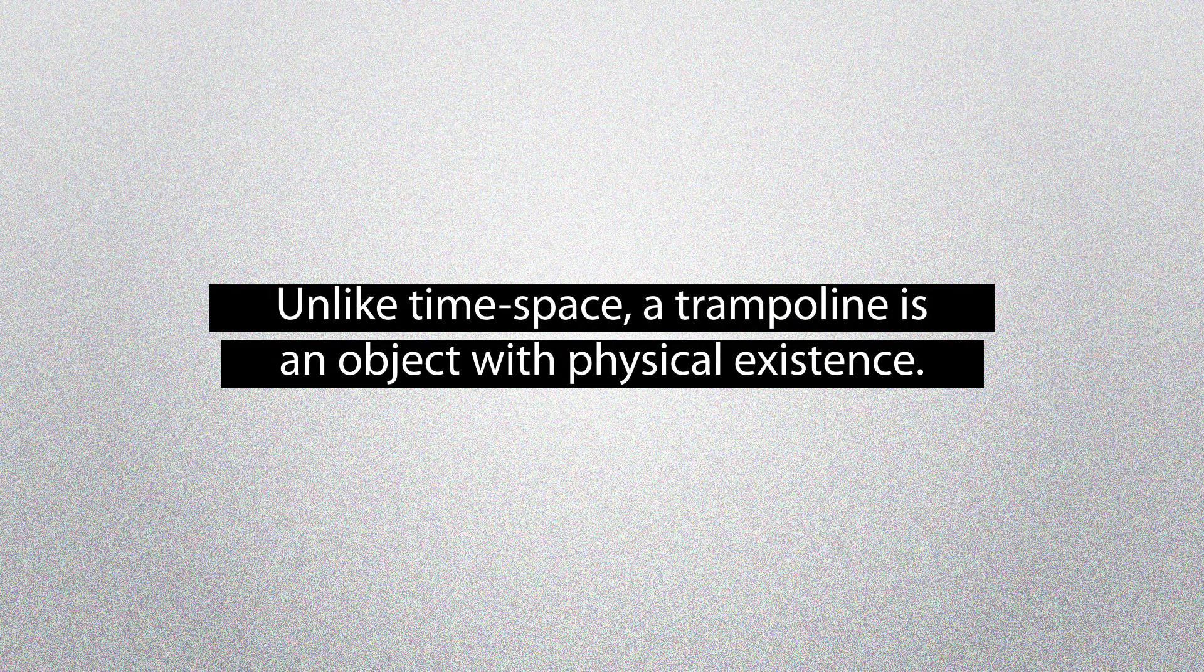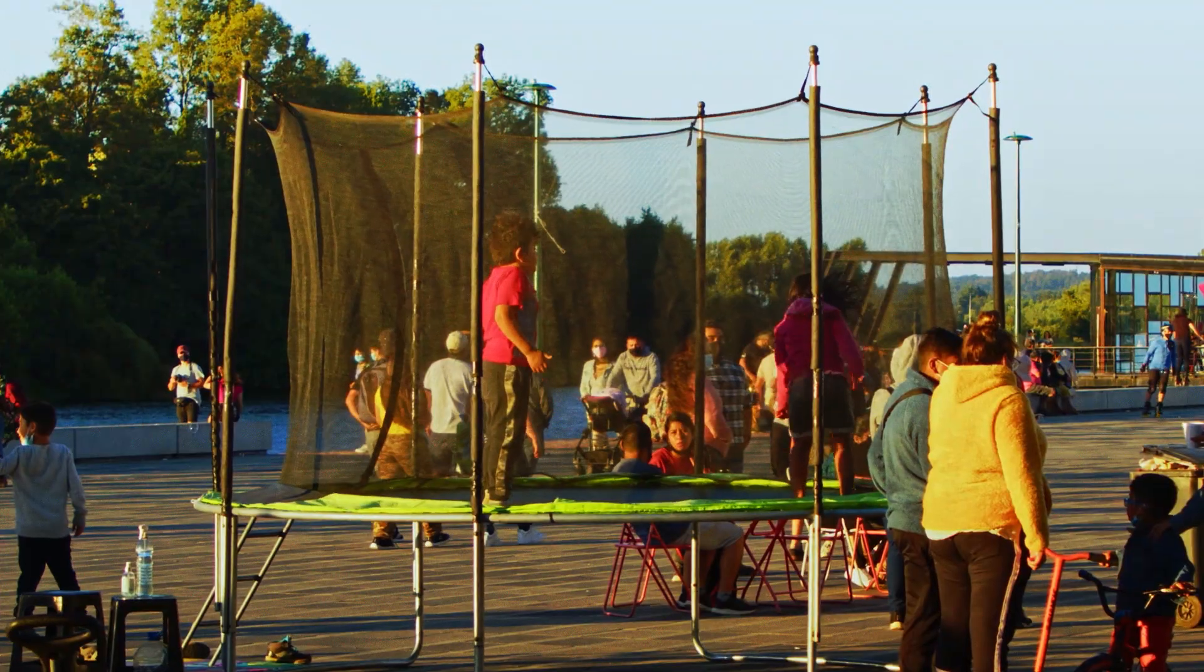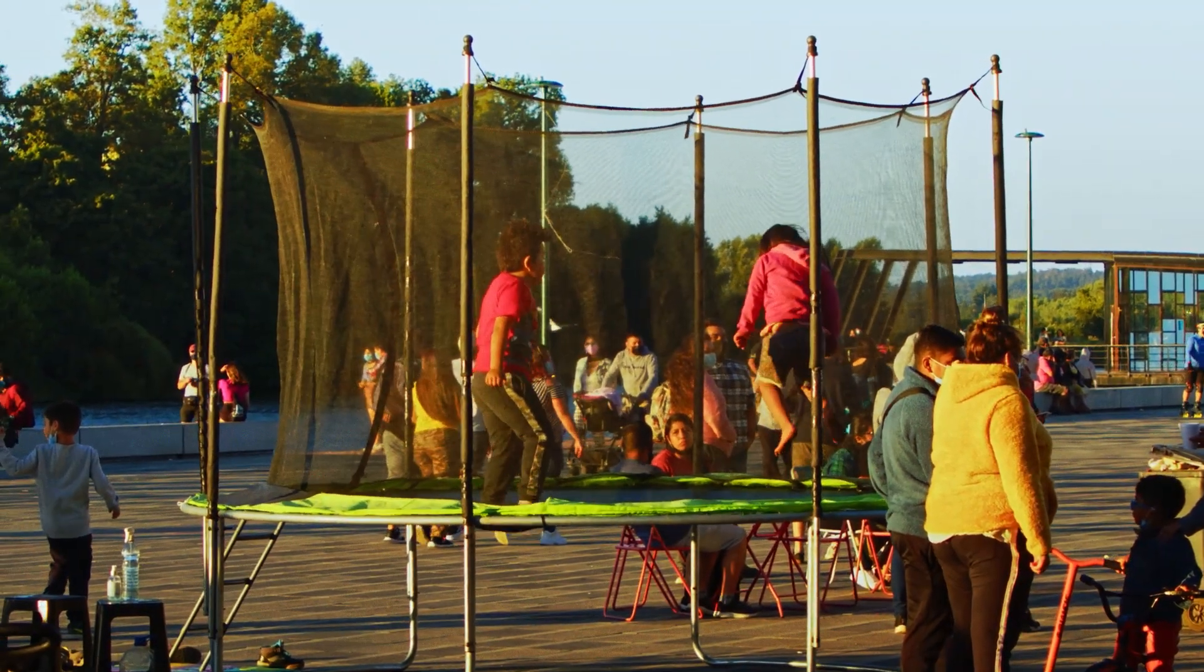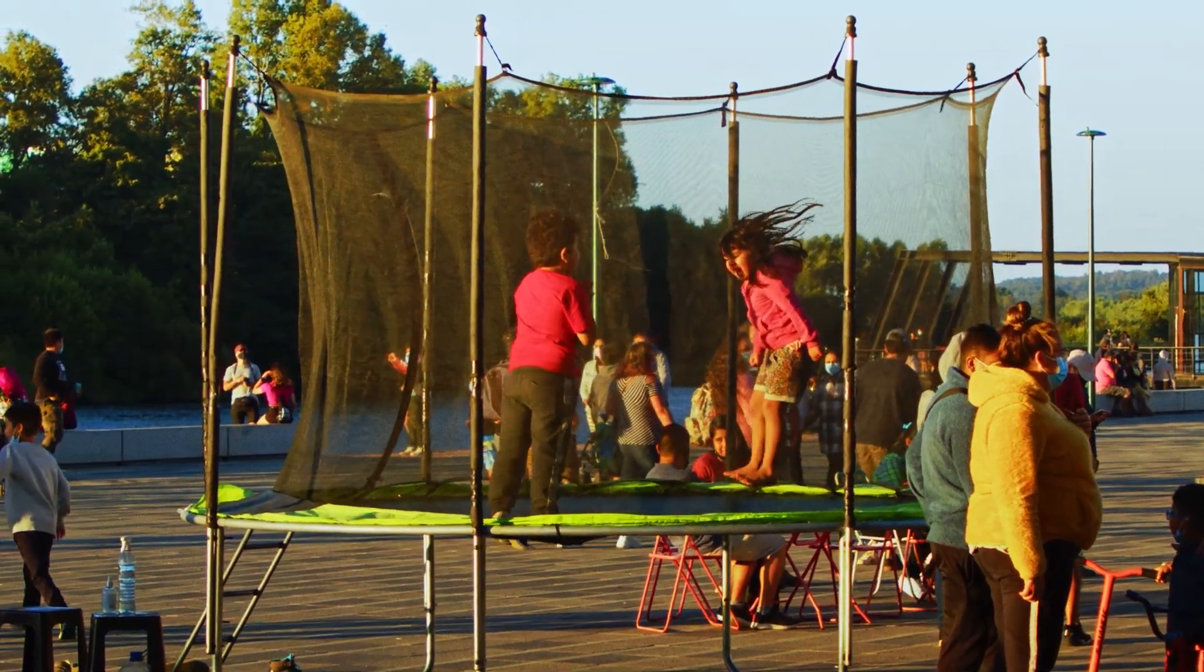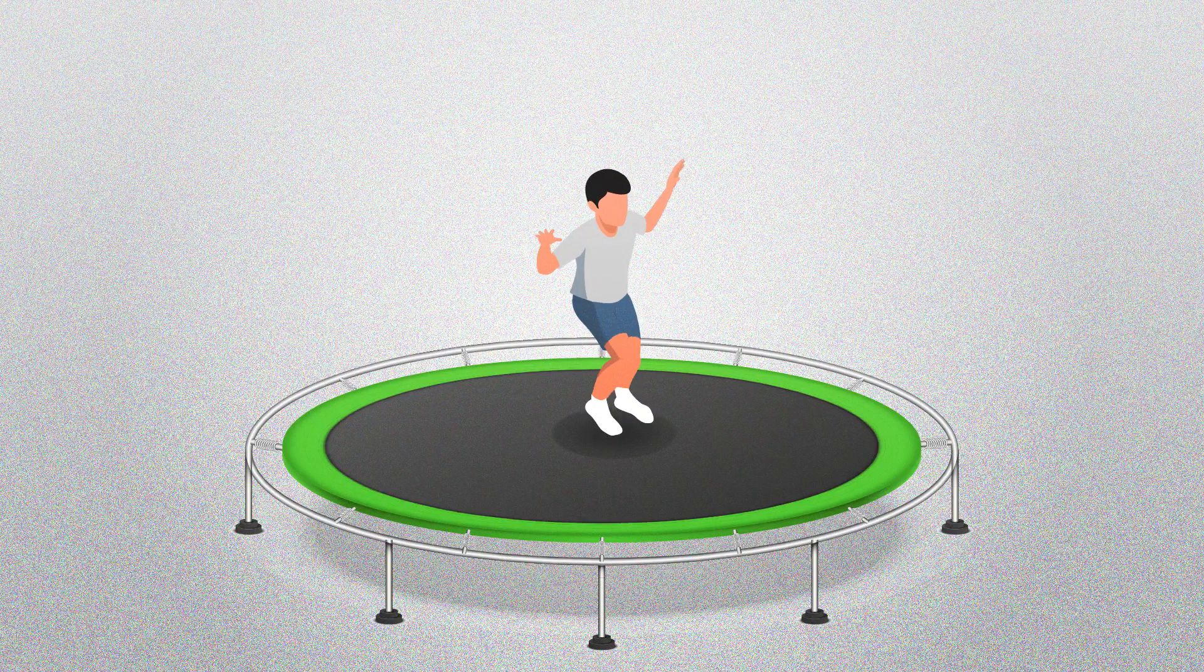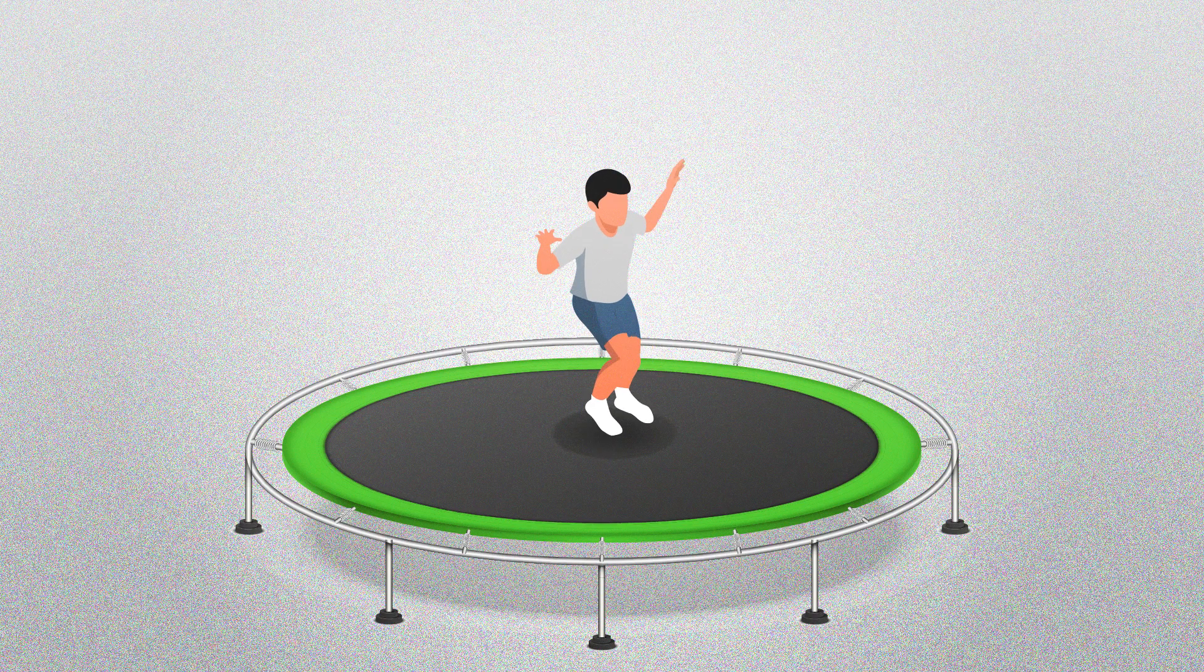Unlike space-time, a trampoline is an object with physical existence. Are we there yet? Not really. The trampoline example is only partially correct in illustrating the process. It is also unfortunately misleading. The first part, stepping on the trampoline creating gravity, is correct.